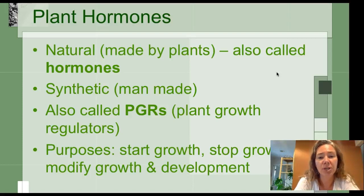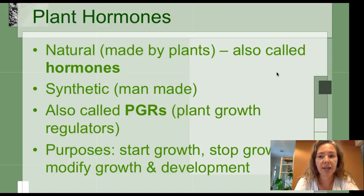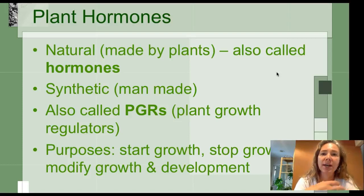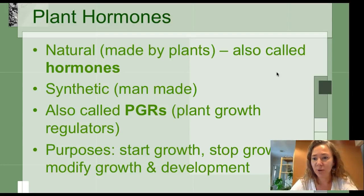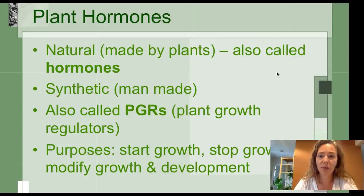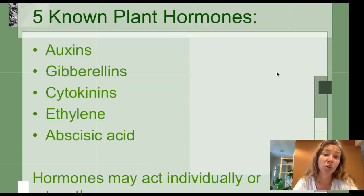We also have synthetic PGRs — things that we can spray on plants that mimic different plant growth regulators or these hormones that plants create, as well as mask them so that they aren't able to send a signal to do what that hormone controls. So these PGRs we can use to start growth, stop growth, modify the bushiness of a plant or the lateral growth of a plant. We can break dormancy or make seeds more dormant.